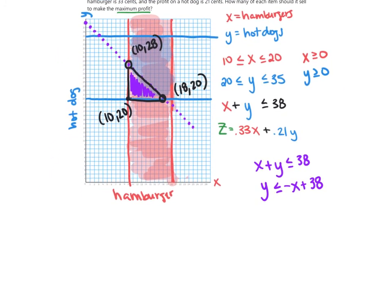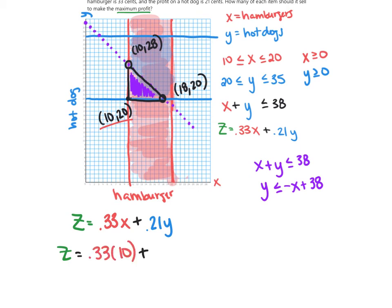Now that we have the feasible region defined, we take those corner points and plug them into the objective function Z equals 0.33X plus 0.21Y to find maximum profit. For the first corner point (10, 20): Z equals 0.33 times 10 plus 0.21 times 20, which gives a Z value of $7.50. For the next point (10, 28): Z equals 0.33 times 10 plus 0.21 times 28.